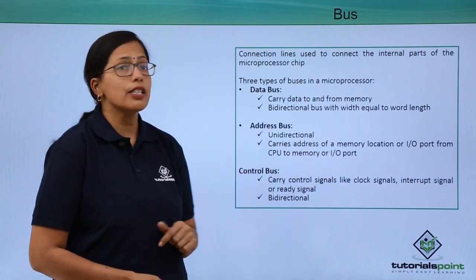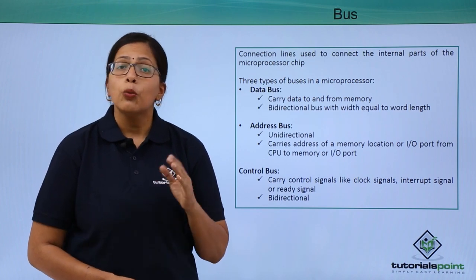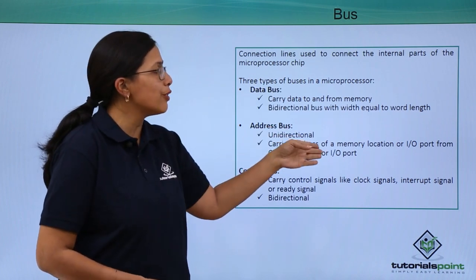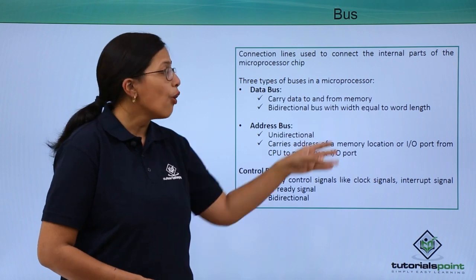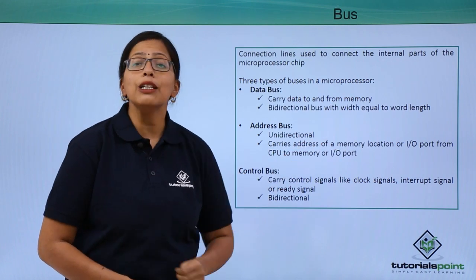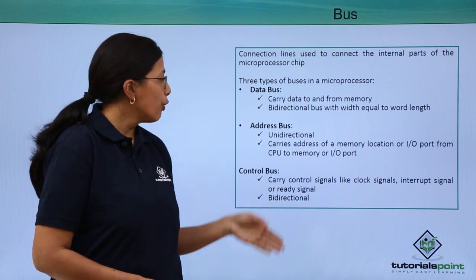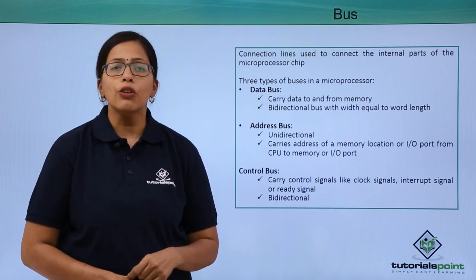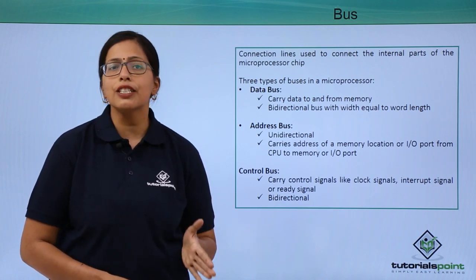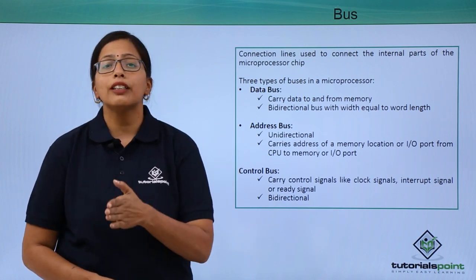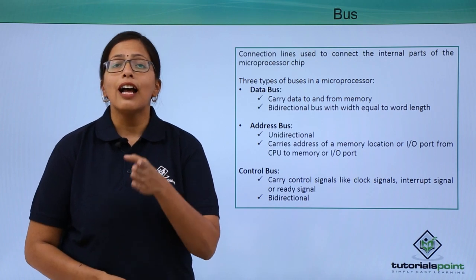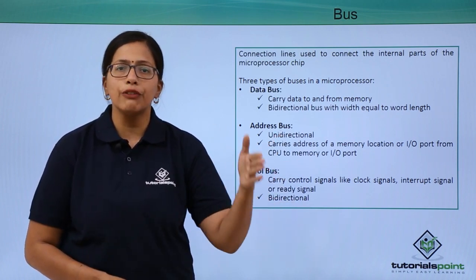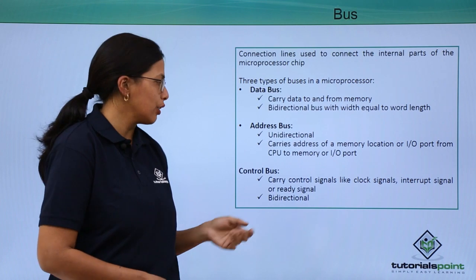The address bus is unidirectional. It carries the address of a memory location or an input/output port from the CPU to the memory — it simply tells the memory what the address is. Because the information flows in just one direction, it is unidirectional.